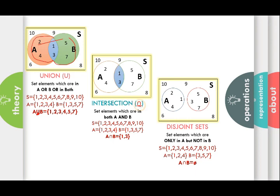Intersection is only the common portion between two sets. The area commonly shared by both sets — elements 1 and 3 are present in both set A and set B. That is why we call this intersection. Intersection is represented by the ∩ symbol, so A ∩ B = {1, 3}.